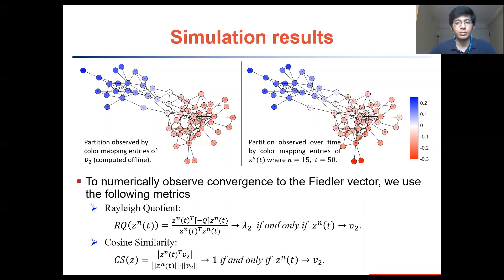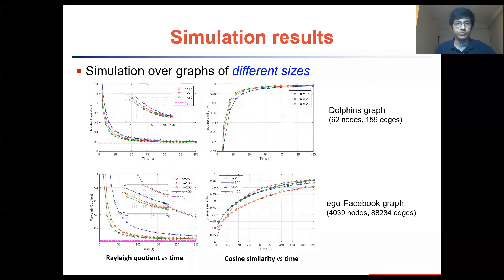To better observe this convergence we keep track of two metrics: the Rayleigh quotient which converges to lambda 2, the algebraic connectivity of the graph, if and only if our estimator converges to the Fiedler vector, and also the cosine similarity which converges to 1 indicating alignment of our estimator with the Fiedler vector. A more detailed description of our simulation setup can be found in our paper.